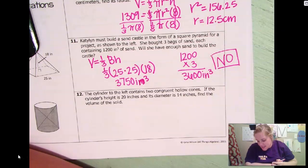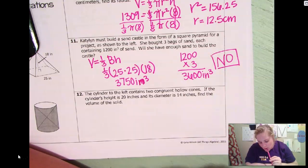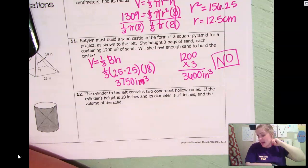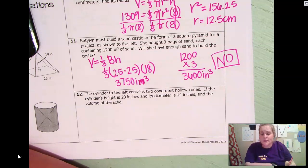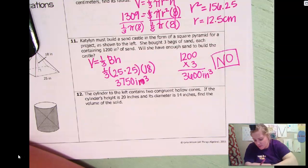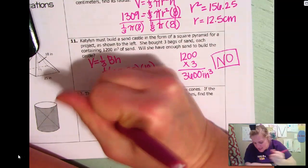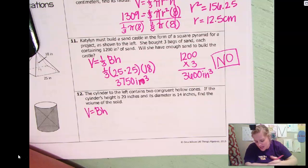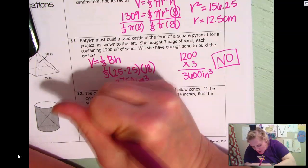Number 12. It says the cylinder to the left contains two congruent hollow cones. Okay. If the cylinder height is 20 and its diameter is 14, find the volume of the solid. Okay. So it's got two cones that are hollow. So the first thing I'm going to do is find the volume of the entire thing. So not one third, just going to have the base, the area of the base times the height. So that's going to be pi r squared times the height.